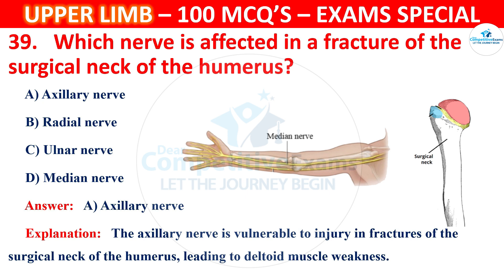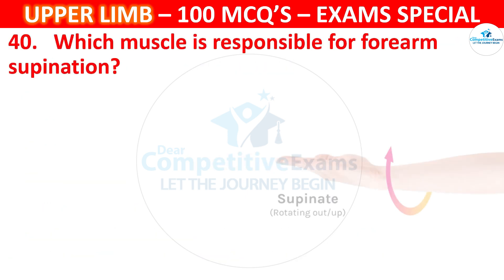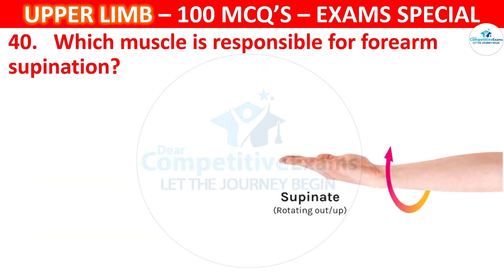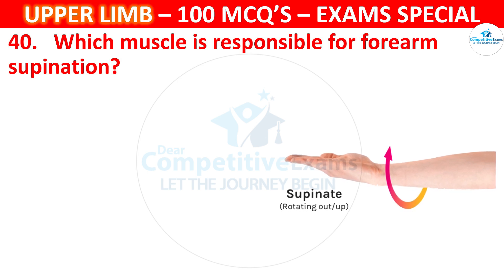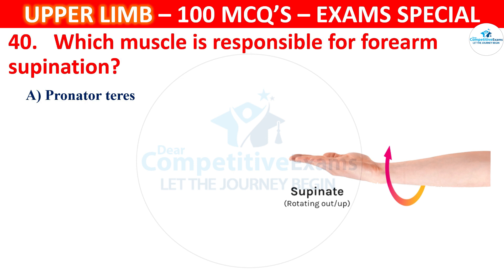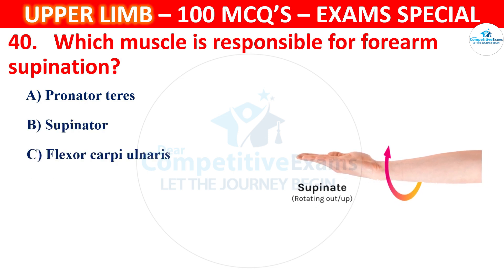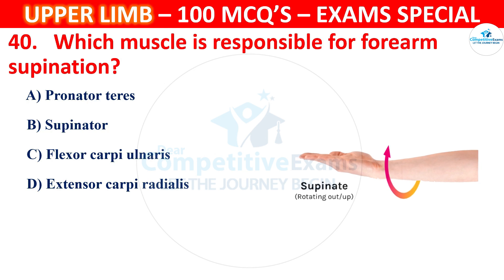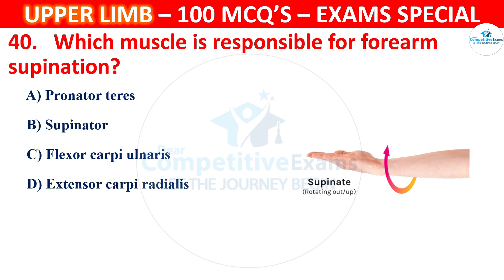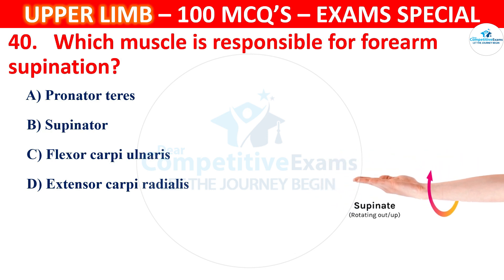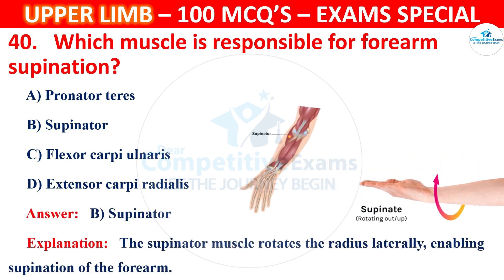Question number 40: Which muscle is responsible for forearm supination? Options: pronator teres, supinator, flexor carpi ulnaris, or extensor carpi radialis. The correct answer is B, supinator. The supinator muscle rotates the radius laterally, enabling supination of the forearm.